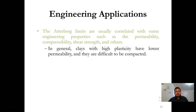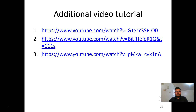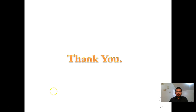The Atterberg limits are usually correlated with engineering properties like permeability, shear strength, and compressibility. So if we know the Atterberg limits, we can predict other soil parameters. Here are some additional videos which will help to further understand the experiment and how to analyze the results. Thank you all for listening. Hope to see you in the next video.